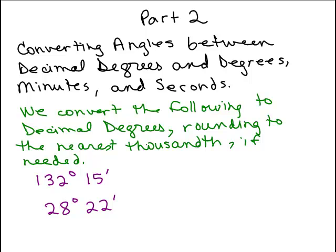This is part two of how to convert angles between decimal degrees and degrees, minutes, and seconds. So in this video, we're going to take something in degrees and minutes, and we're going to convert it to decimal degrees.